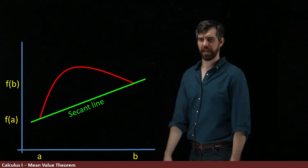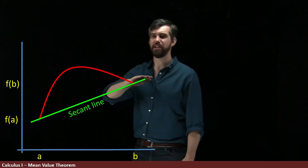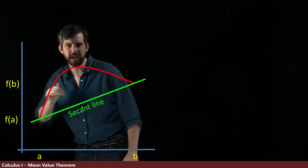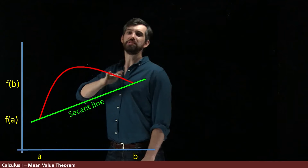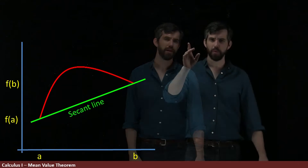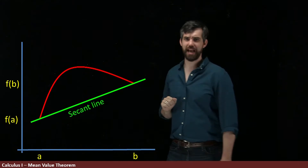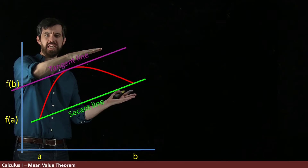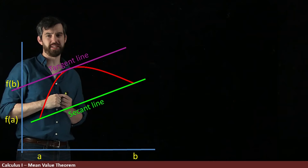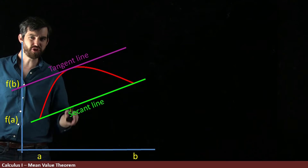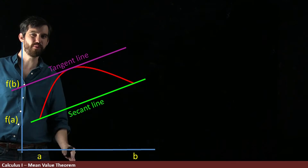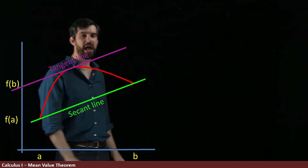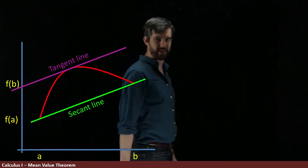Now think about tangent lines. There are all sorts of tangent lines to this curve — a tangent line here, a tangent line there, and so on. But one of those tangent lines is going to be the one that has the exact same slope as the secant line. It looks like it hits right around here, where the slope of the tangent line at that point and the slope of the secant line are exactly the same thing.